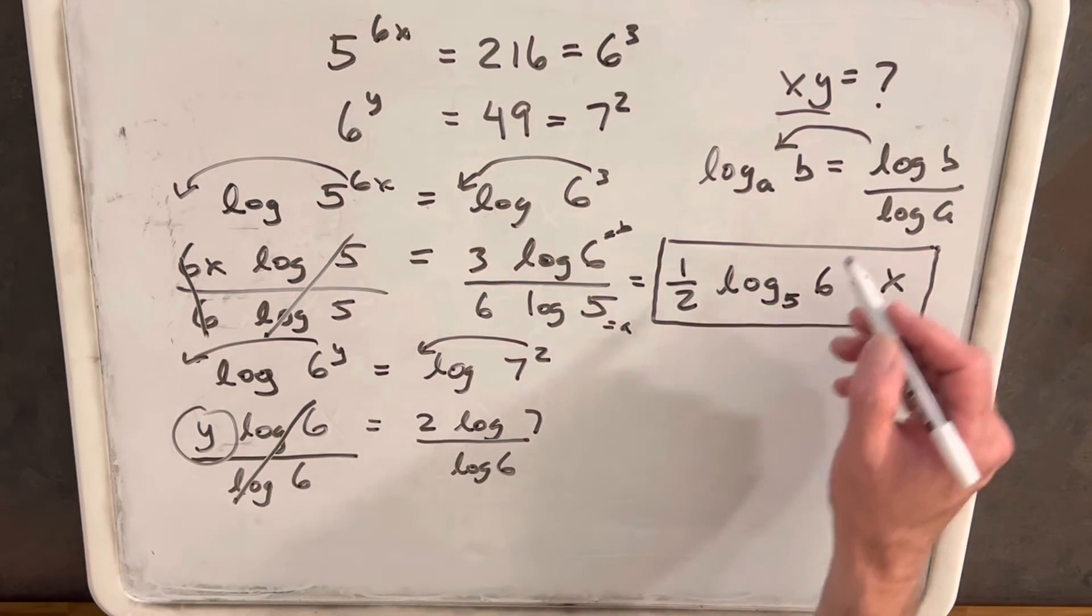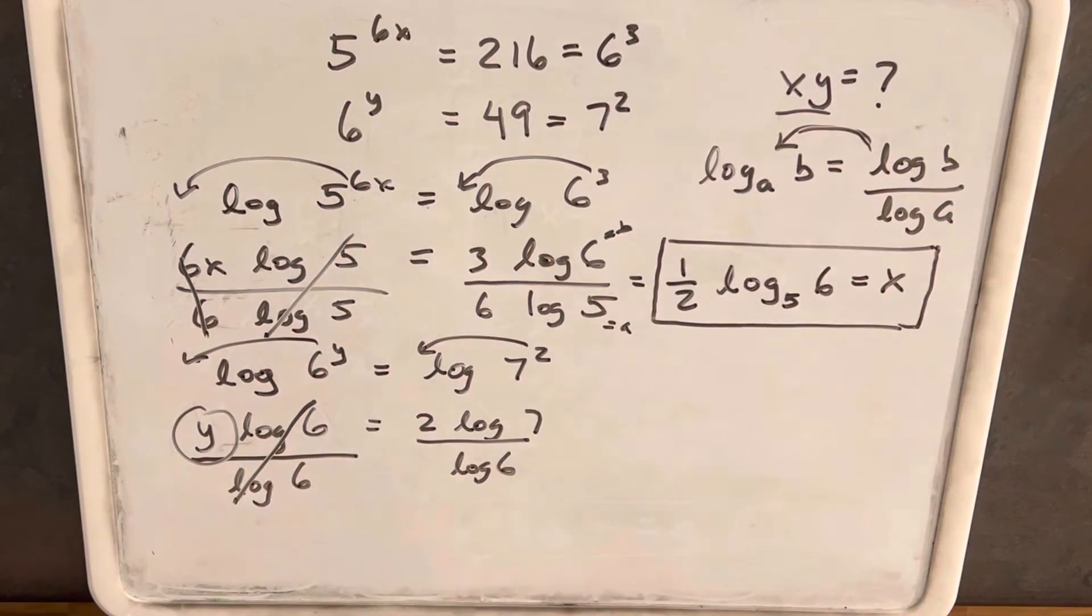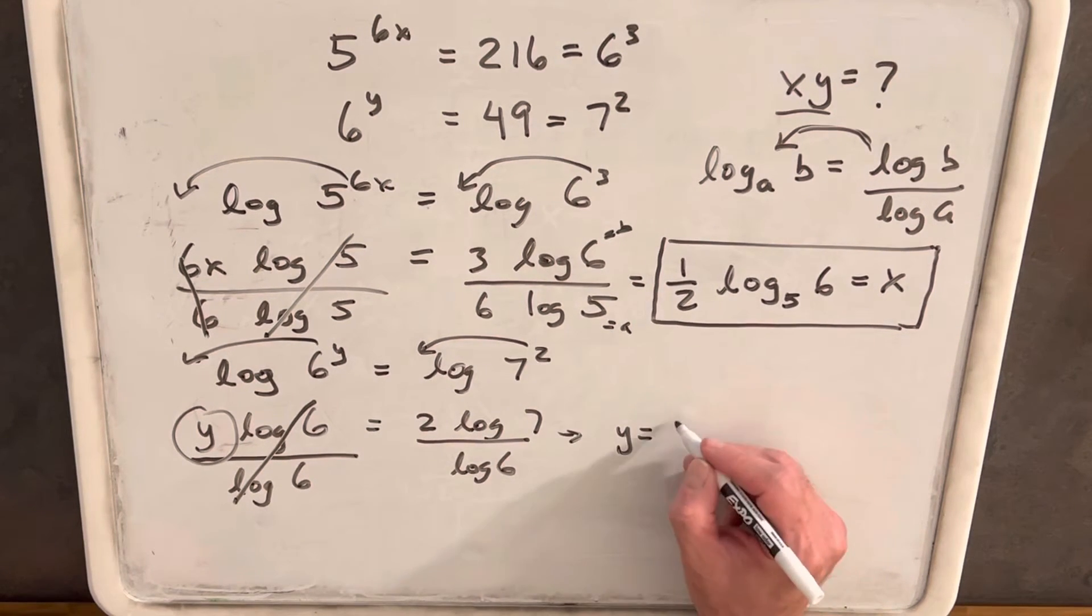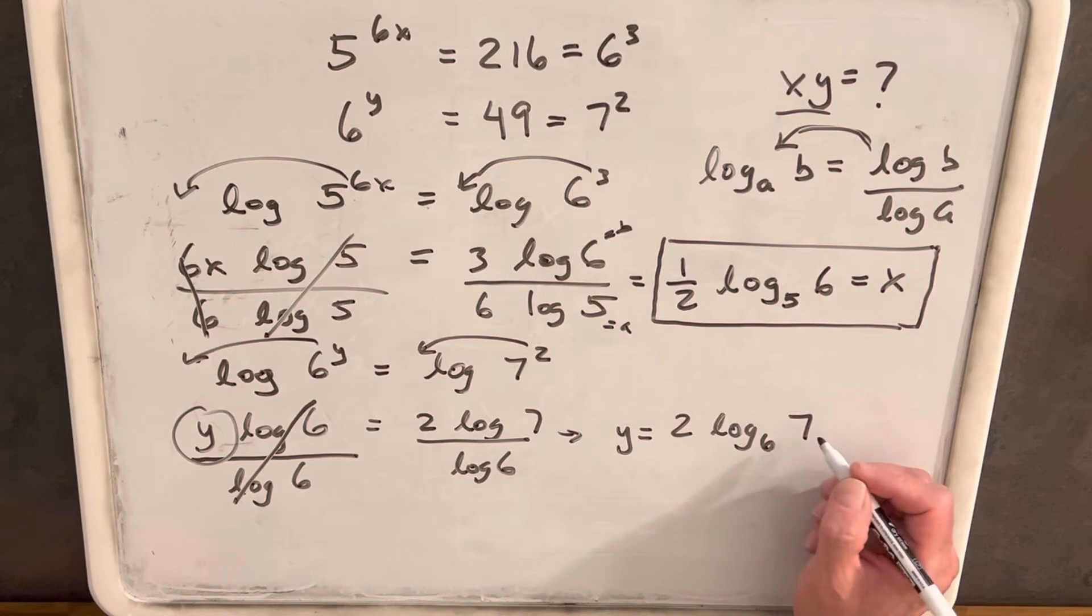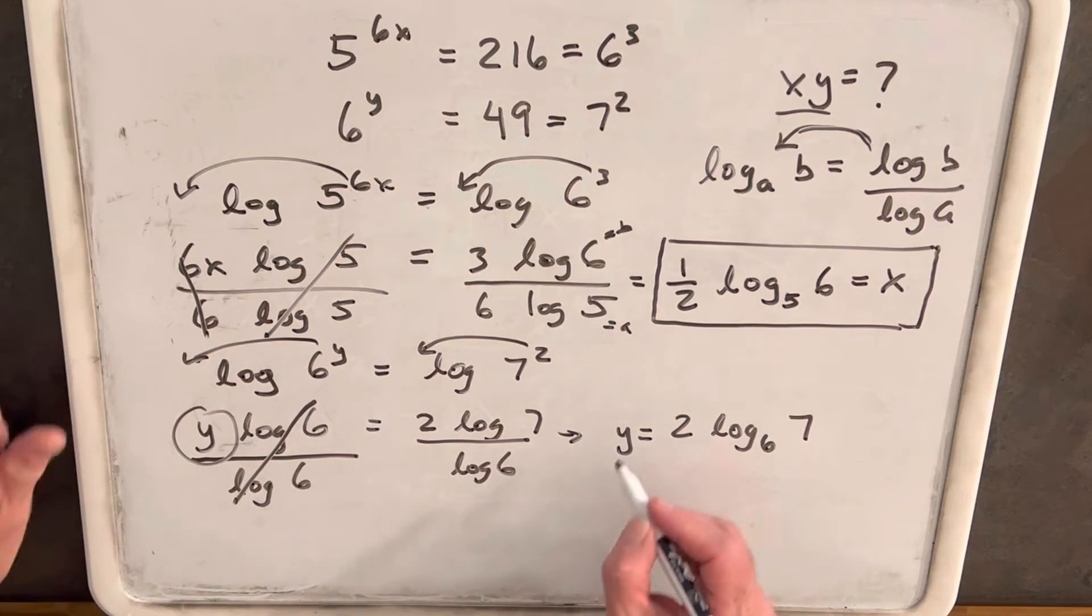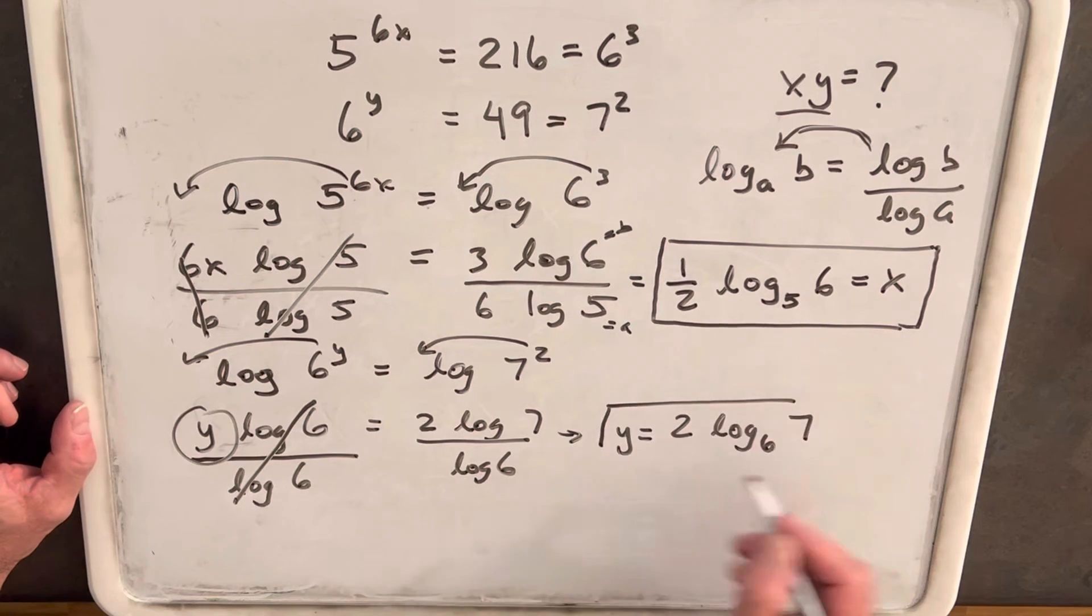Then we'll use, again, this rule that we just did here, reversing the change of base formula, and we end up with y equals 2 log base 6, 7. So we have our y.